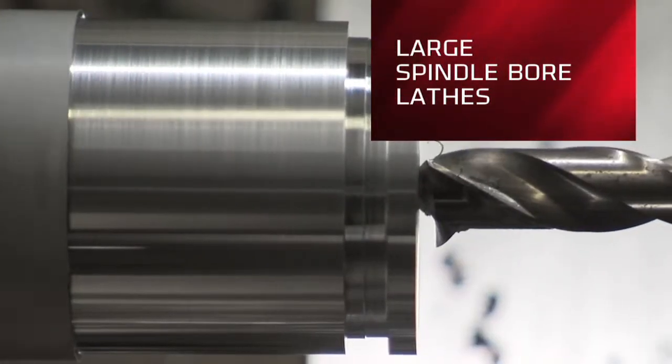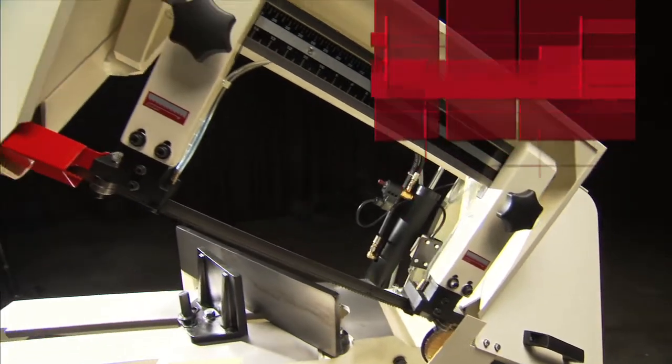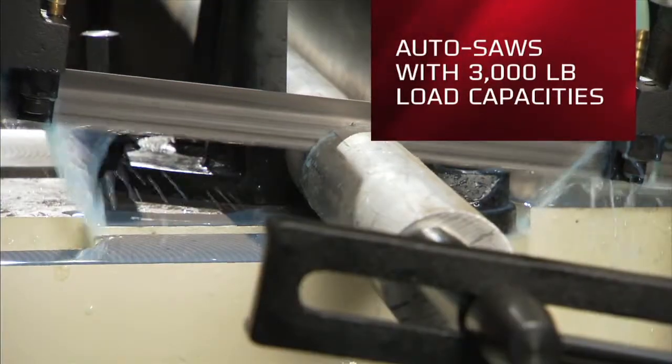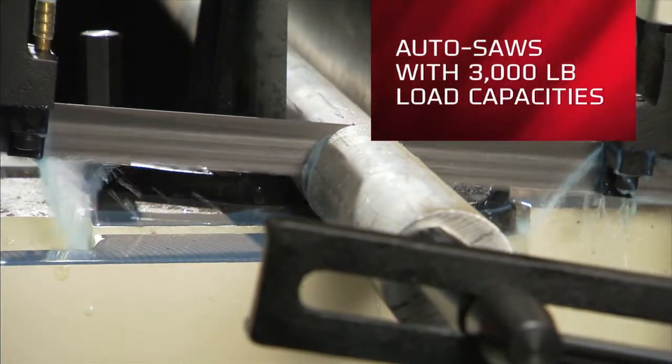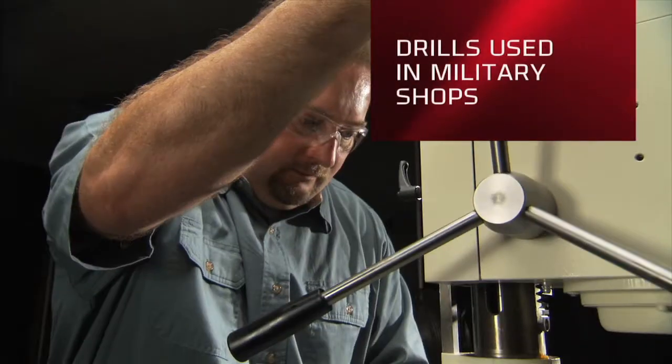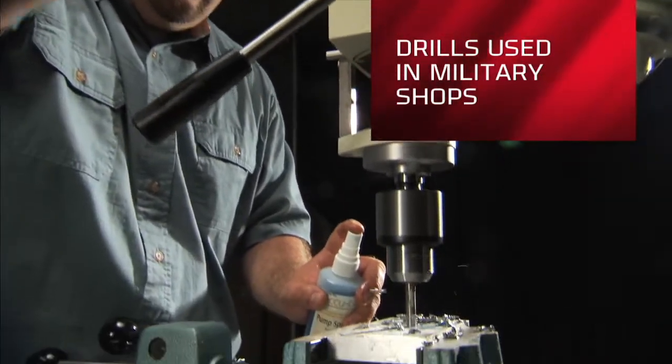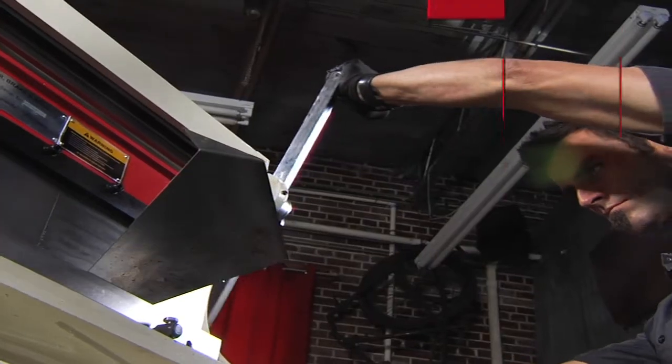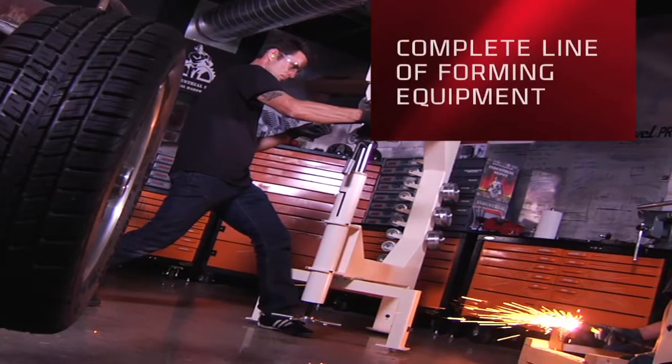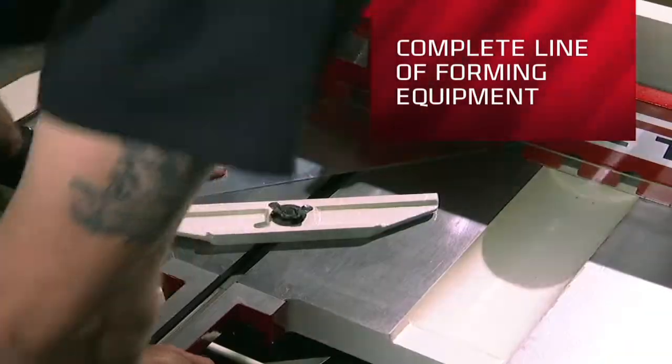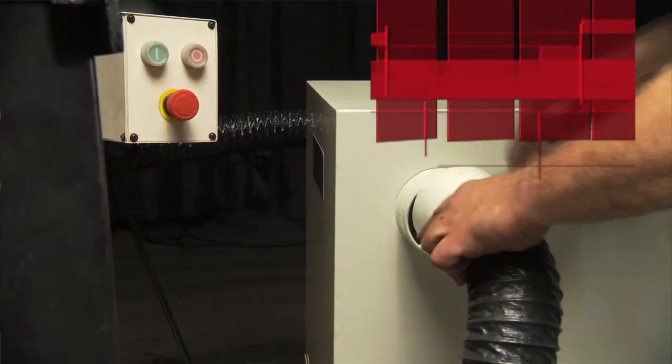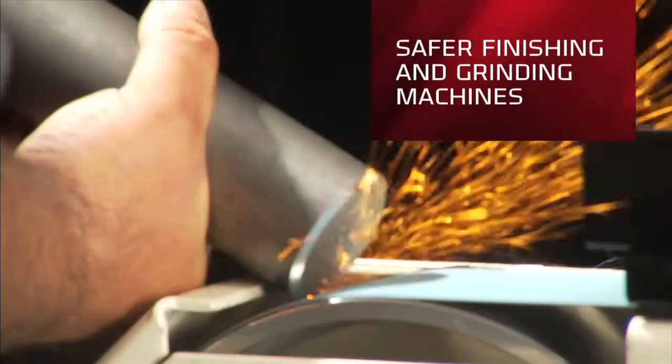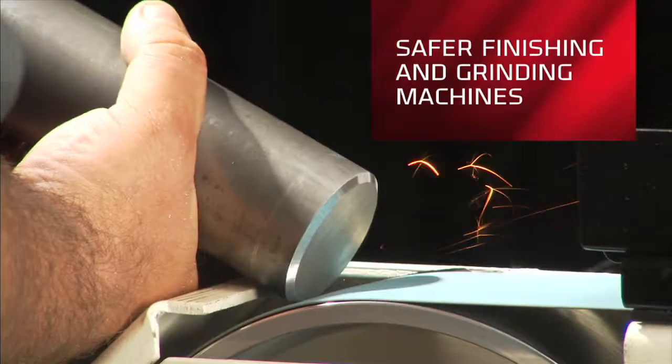JET customers are using horizontal auto saws with more than 3,000 pound load capacities. JET drilling machines service military maintenance shops all the way up to large shipping yards and public works facilities. JET has forming equipment that's letting small teams build world-class motorcycles. JET's new dust collection systems are making finishing and grinding safer than ever before.